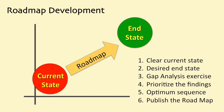Understanding human nature is critical because it defines the current state of society. Anyone who wants to create a roadmap for improving our social, economic, and political reality will need to have an understanding of both the end state and the current state. Steps in developing a roadmap include: first, develop a clear and unambiguous understanding of the current state; second, define the desired end state; third, conduct a gap analysis exercise; then prioritize findings into gap closure strategies; find the optimum sequence of actions recognizing predecessor-successor relationships; and finally, develop, publish, and implement the roadmap.